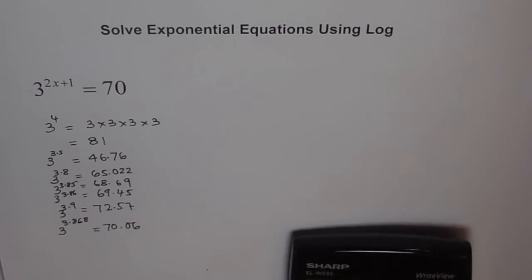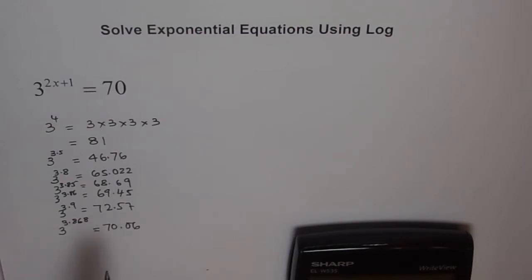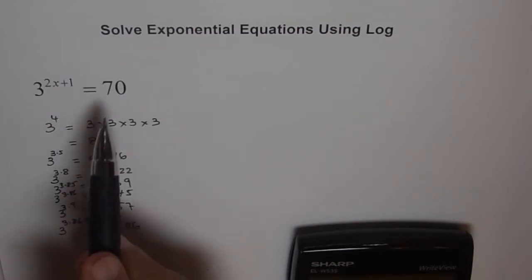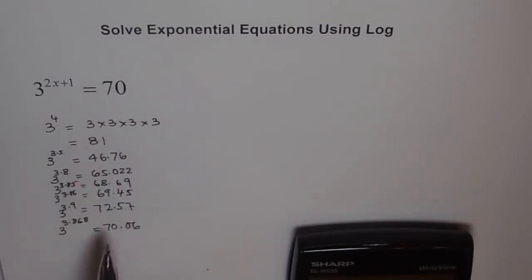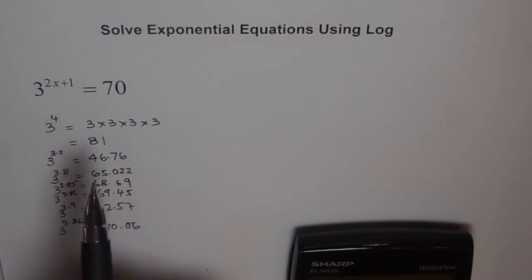There is a very nice calculator which can do all the work for you. I could have gone directly to log to find the answer — I'll show that also. When you have to use a calculator 10 times, why not use it just once? Let's figure out the answer now. Assuming 3 to the power of something equals 70, and that something is 3.868, we can now solve our linear equation.